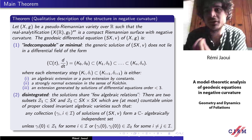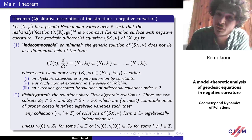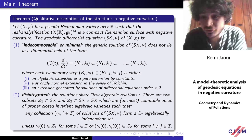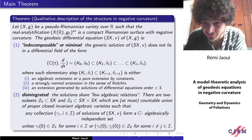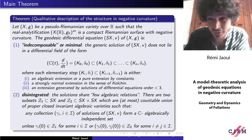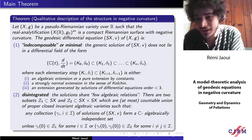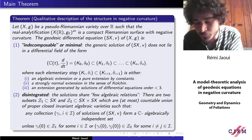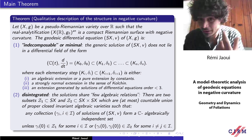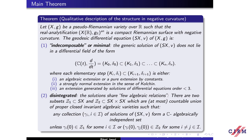The second property, mimicking Painlevé's algebraic independence property, is that solutions share few algebraic relations. There exist two subsets Z1 and Z2 — one in one copy of the phase space, one in the product of two copies — each a countable union of proper closed invariant algebraic subvarieties. To confirm that solutions form a C-algebraically independent set, you only check that no initial condition belongs to Z1, and no pair of distinct initial conditions belongs to Z2. Crucially, there is no Z3, Z4, Z5 — just as with weak mixing, you only need to understand one copy and the product of two copies.